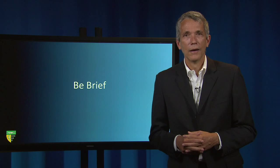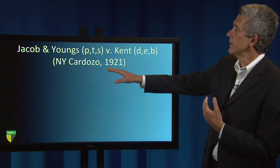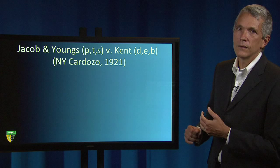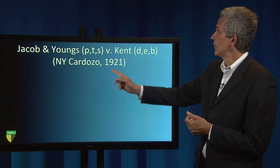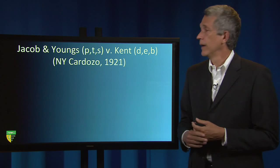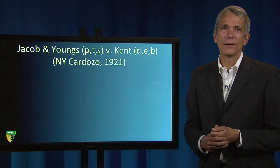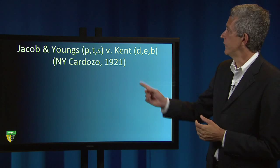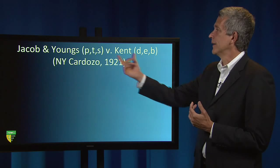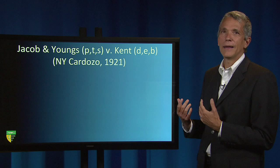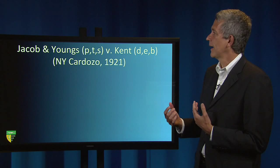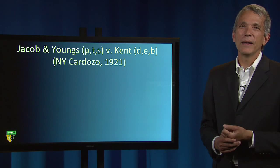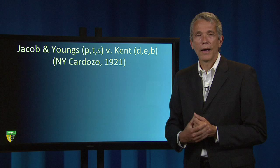For example, the first line might say 'Jacob and Youngs versus Kent.' This tells me that Jacob and Youngs was the plaintiff and the appellant — I use T and E for appellant and appellee respectively. In this contracts case, the S indicates that Jacob and Youngs was the seller of services, and Kent was the defendant, the appellee, and the buyer. The case was decided in 1921 in the New York Court of Appeals, the highest court of New York, by Justice Cardozo.